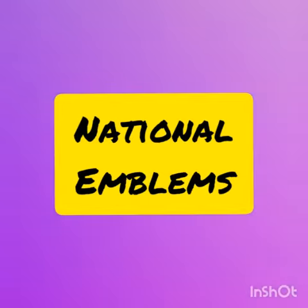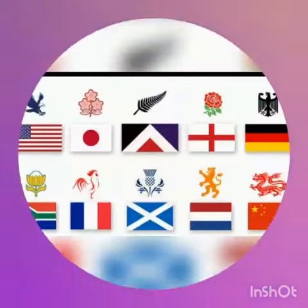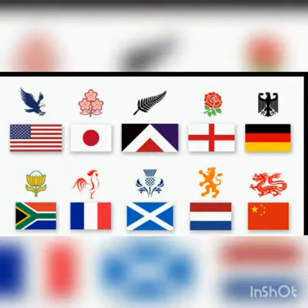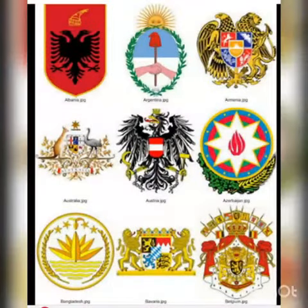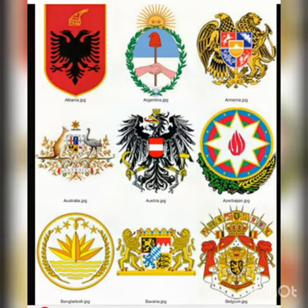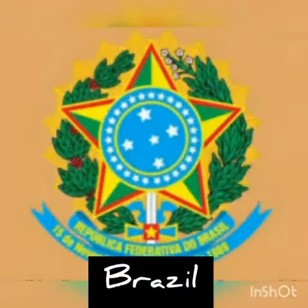A National Emblem is a symbolic representation of a country's culture and traditions. They are used for official purposes by the government offices of the respective countries.